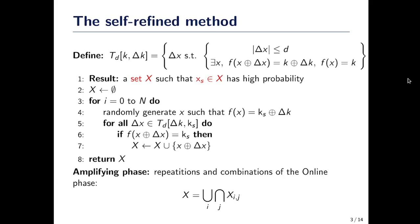After the online phase, there is something called the amplifying phase — basically just a repetition and combination of multiple online phases to increase the probability. But it's not important for us. What's really important is the online phase.